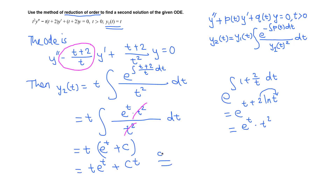If we take c = 0, then y2 = t·e^t is a second solution. Note that t is already accounted for as the first solution y1, so we don't want to list that again. Therefore t·e^t is a second solution, which is linearly independent from y1 = t.